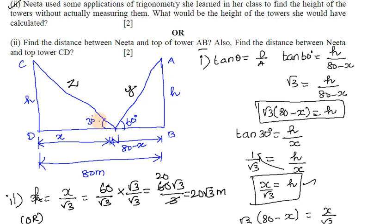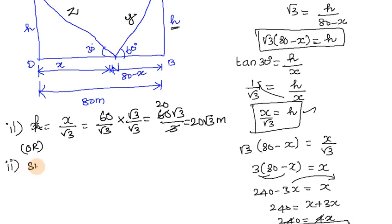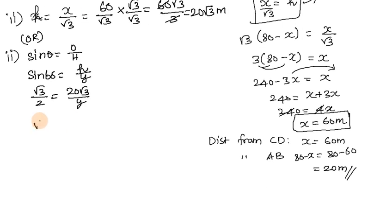We need to find this distance using sin θ formula. Sin θ equals opposite by hypotenuse. Sin 60° equals h by y, so height 20√3 equals by y. If you cross multiply, √3y equals 40√3, so y equals 40 meters.